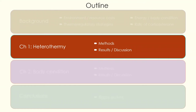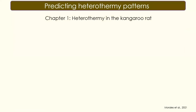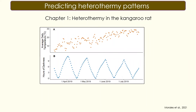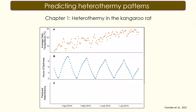Before getting into the methods of my first chapter, I want to go over some predictions about heterothermia. In the desert across the summer, the average daily temperature slowly rises and becomes less variable, while nights get shorter — reducing prime foraging time for kangaroo rats. If daily temperature is becoming higher, it should become easier for kangaroo rats to maintain homeothermy, and we'd expect heterothermia patterns to decrease. However, if activity and darkness are more important, and darkness becomes shorter, we might predict heterothermia patterns to increase as animals become more inactive.